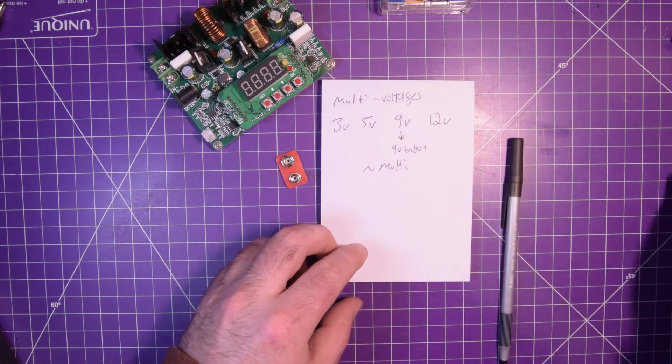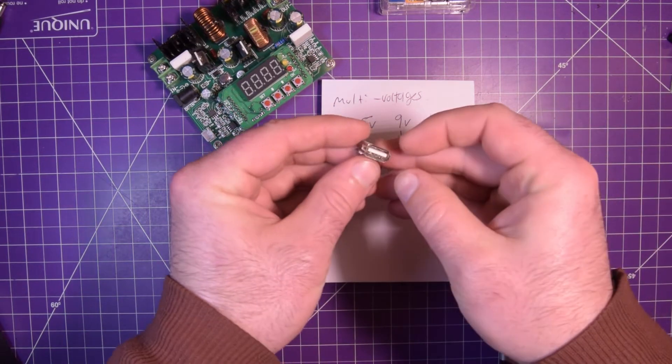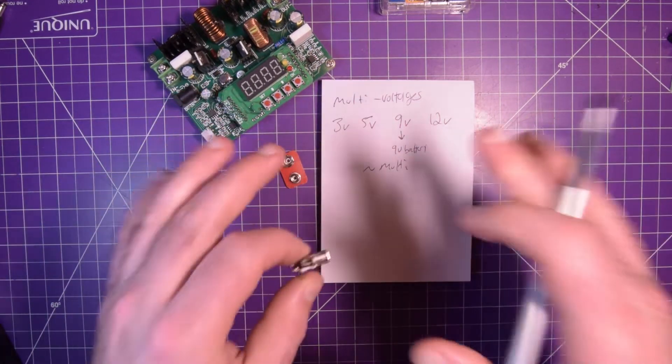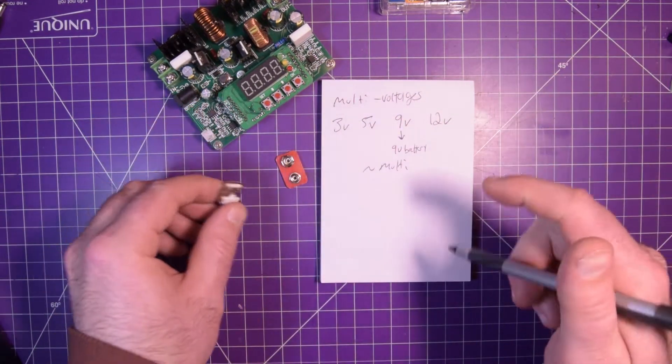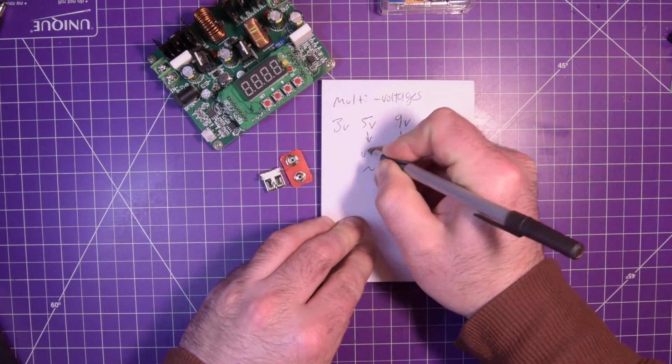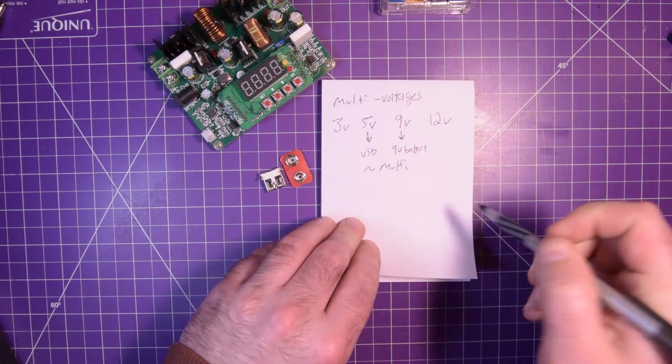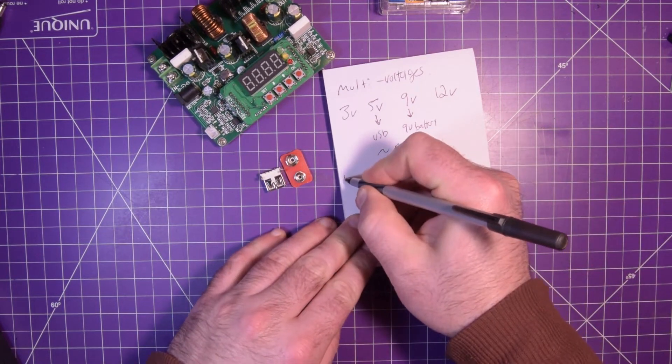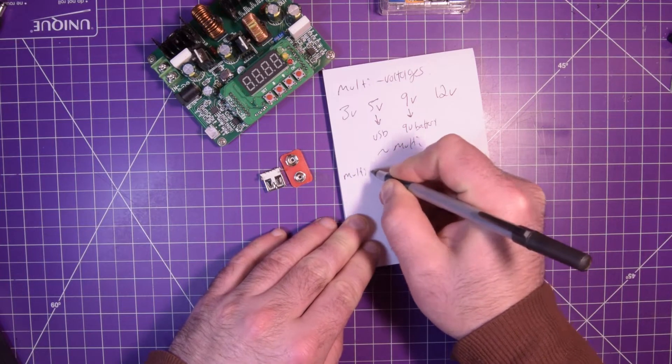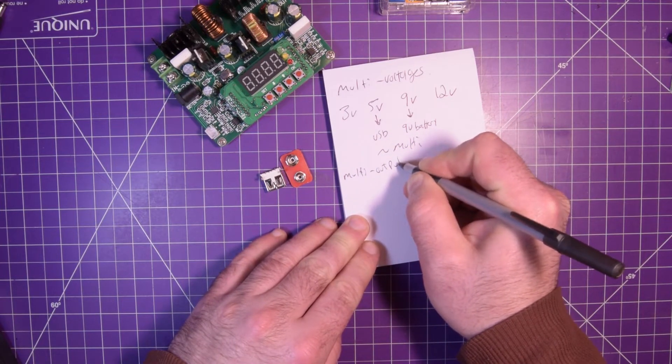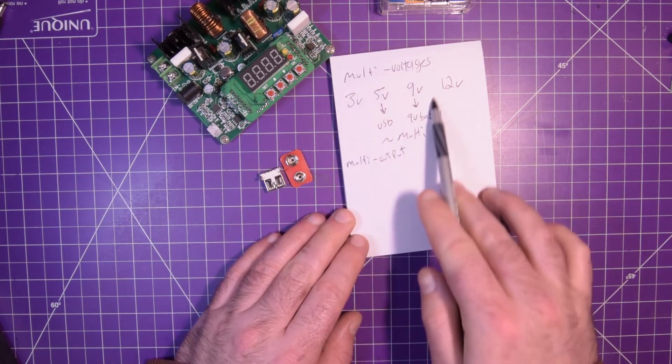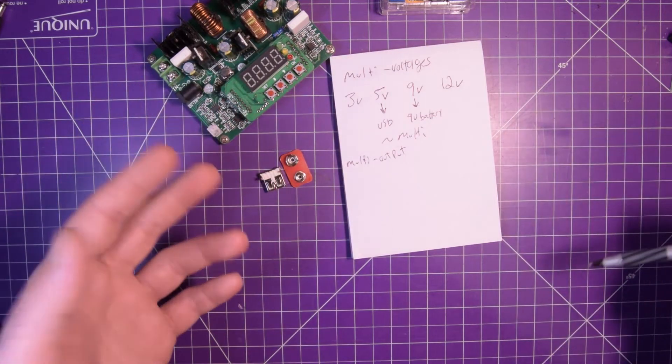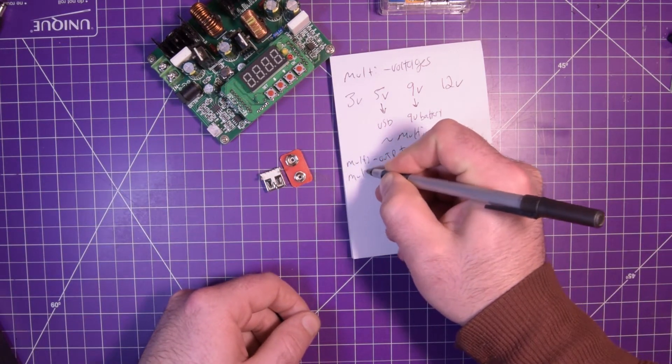For 5 volt, I would also like a USB socket because there's a lot of stuff that's powered by USB. Just really convenient to have a USB power supply kicking around. It has to be multi-output, meaning I need to be able to use any of these voltages in sequence, so I can use them all at the same time.